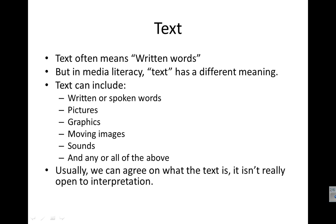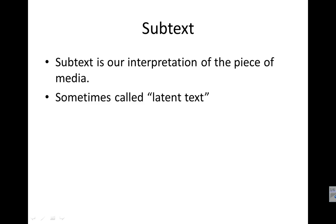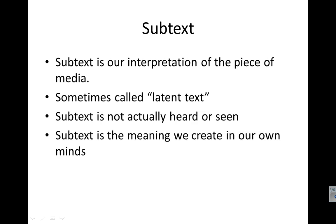Usually we can agree on what the text is — it isn't really open to interpretation. I'll show you an example of that at the end of this. Subtext is our interpretation of the piece of media. Sometimes it's called latent text, latent kind of meaning hidden or in the background. And subtext is not actually heard or seen — subtext is the meaning that we create in our own minds.